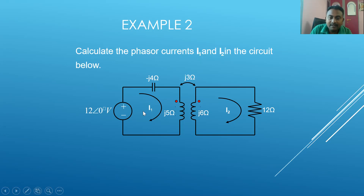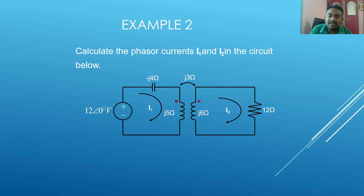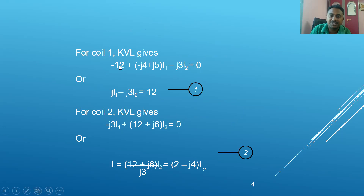In loop one, the current enters at the dotted side, but loop two current enters on the opposite side. We must remember the dot convention: if both currents enter in the same direction, we use the same sign for mutual inductance; if they differ, we take the opposite sign of the mutual inductance term.